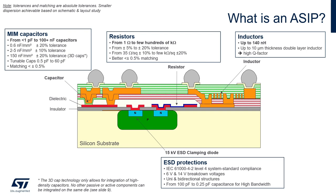Depending on the technology and process variant used, the maximum value of the components that can be integrated varies, as well as the corresponding tolerance. Sub-picofarad capacitors all the way to 100-plus nanofarad capacitors can be integrated. Resistors from one ohm to hundreds of kilohms can be used, and inductors usually range all the way up to about 140 nanohenry.